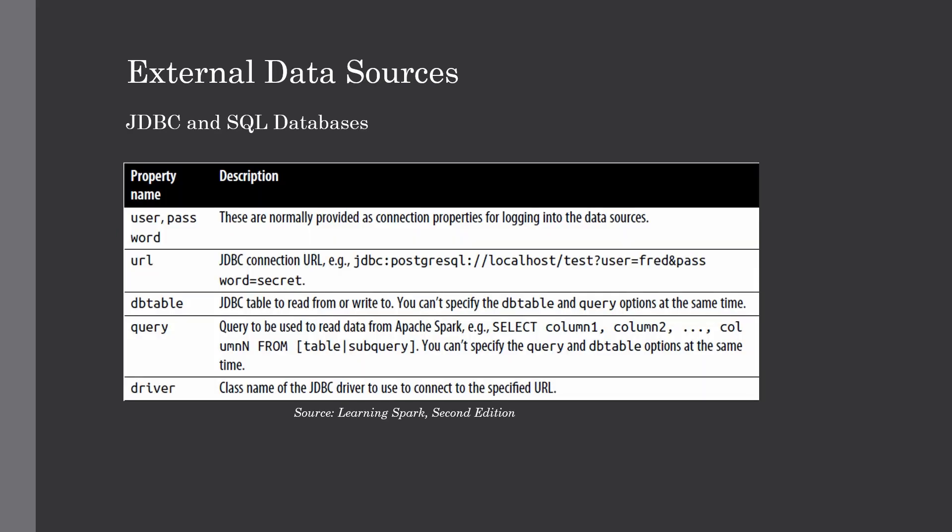Now let's jump to the more interesting topic: integrating Spark with external data sources. Till now we've only imported CSV files already present on our local machine. In the real world, you won't have files sitting on a local PC — you'll have production data in some source database, whether SQL or NoSQL. That's why we need to learn how to connect SQL databases with Spark using JDBC connections.